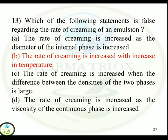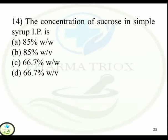Question 14: The concentration of sucrose in simple syrup IP is — Option A: 85% w/w. Option B: 85% w/v. Option C: 66.7% w/w. Option D: 66.7% w/v. Correct answer is Option C — 66.7% weight by weight.